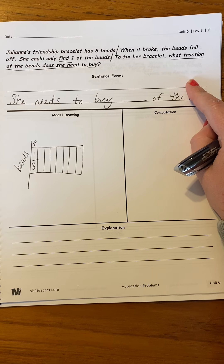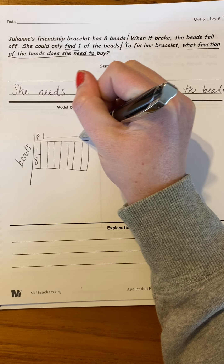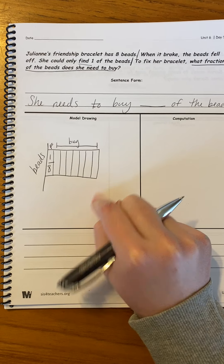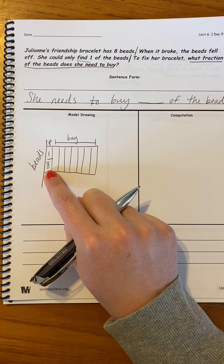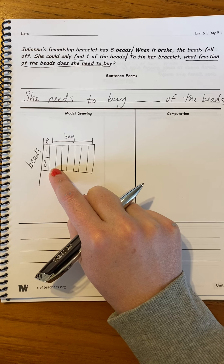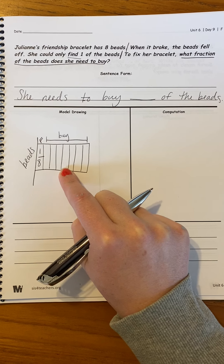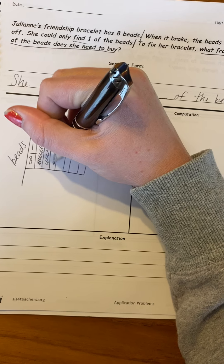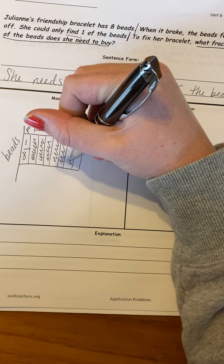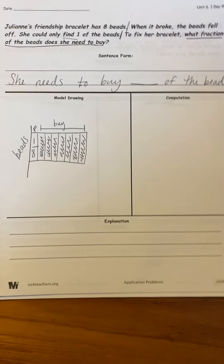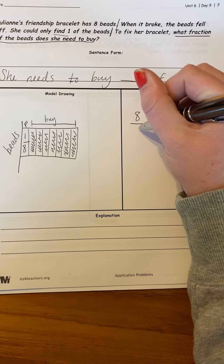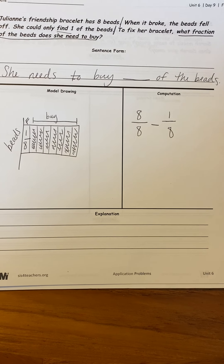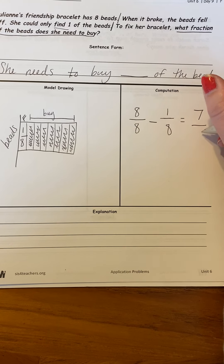So what fraction does she need to buy? Well, these are all the ones she lost that she needs to buy. I'm going to label that section 'buy' — or you could have put 'lost' because it represents the same thing. If we have one eighth being shown that she found, let's count how many eighths she needs to buy: one eighth, two eighths, three eighths, four eighths, five eighths, six eighths, seven eighths. I'm going to shade that in to really have a good visual representation. We haven't really talked about subtracting fractions, but that's what we just did — eight eighths minus the one eighth she could find leaves seven eighths that she needs to go buy.